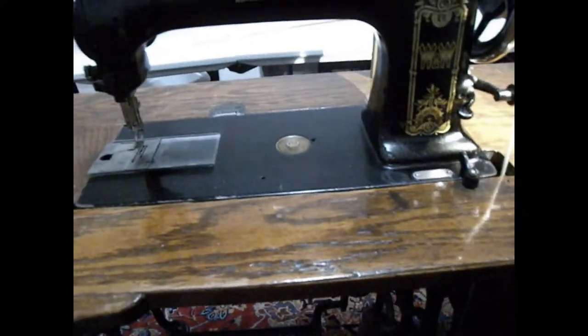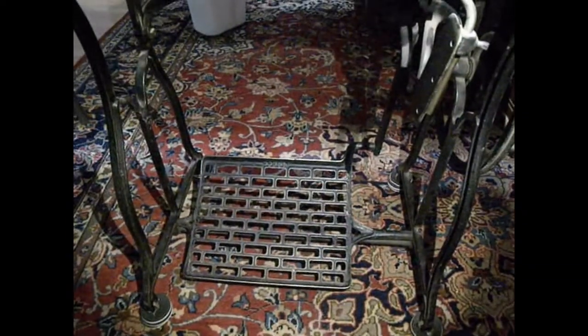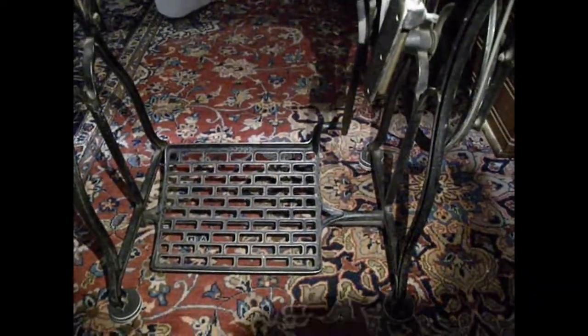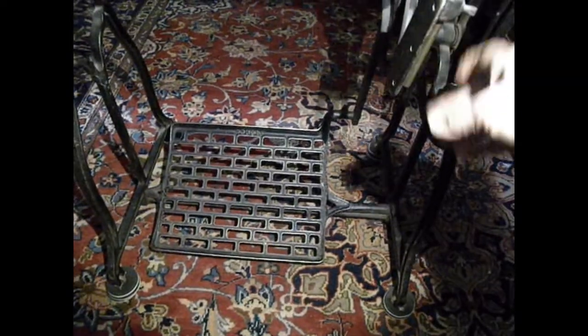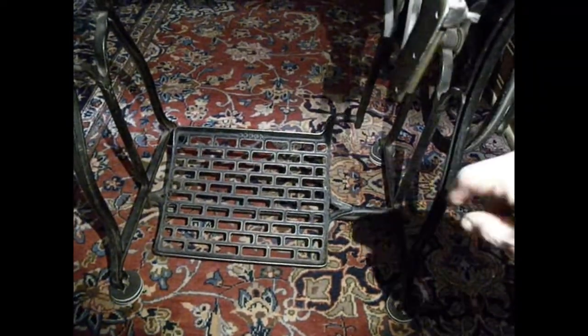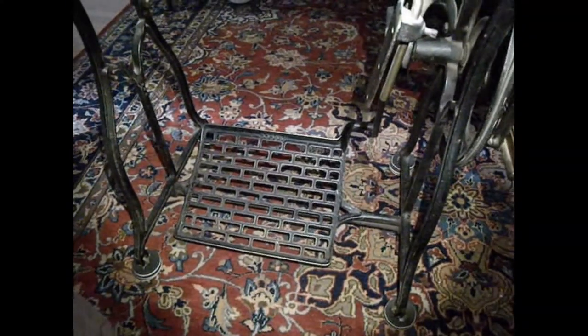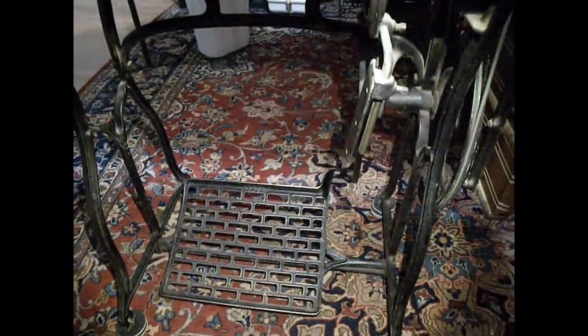The base is the industrial version of the Wheeler and Wilson machines. It has a knee lift, a wider area underneath, plus the larger pedal, so that's an original industrial treadle base.